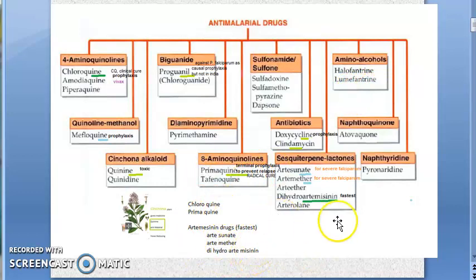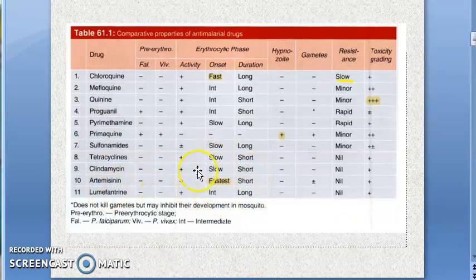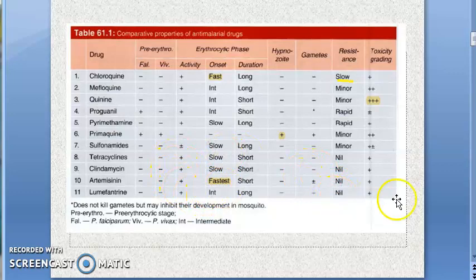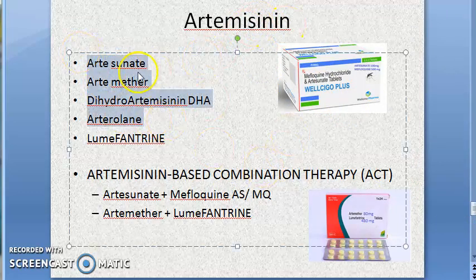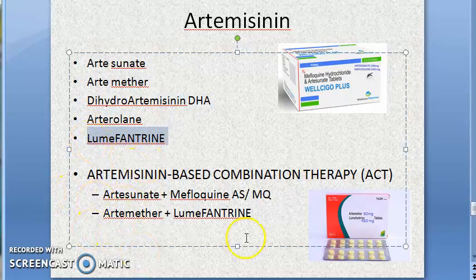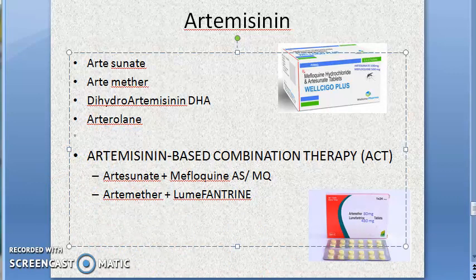Artemisinin drugs are the fastest — they have the fastest onset, no resistance has been seen to them, they can kill gametes, and they can kill the erythrocytic phase. These four you should know: artesunate, artemether, dihydroartemisinin, and arterolane with lumefantrine.